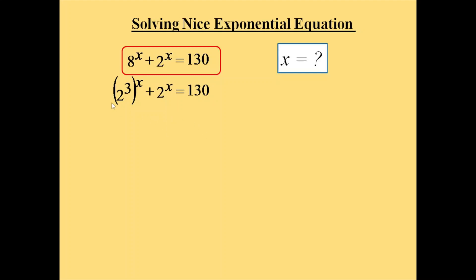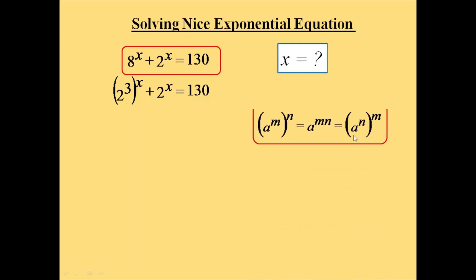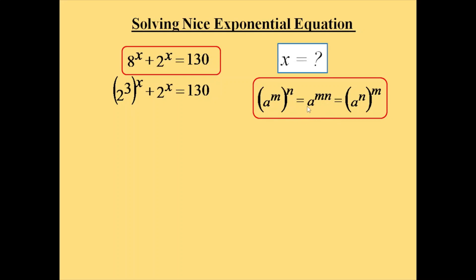We have the exponent rule: a^m whole power n equals a^(mn), which also equals a^n whole power m — the values of m and n are just reversed. By applying this formula, we can write (2^3)^x as (2^x)^3.